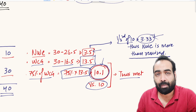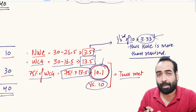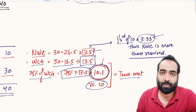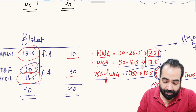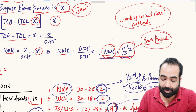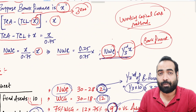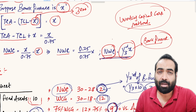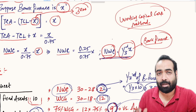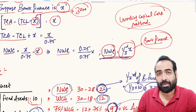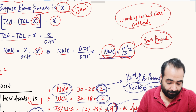Testing our derived formula: one-third of bank finance = one-third of ₹10 = ₹3.33. Actual NWC is ₹3.5, which exceeds the minimum requirement of ₹3.33 — so MPBF norms are met under Method 1. This confirms the theory that NWC should be at least one-third of your bank finance to justify your limit under the Maximum Permissible Bank Finance method. We will cover Method 2 in the next video — stay tuned, thank you very much.